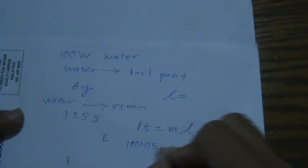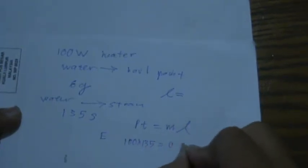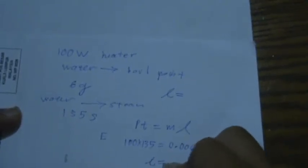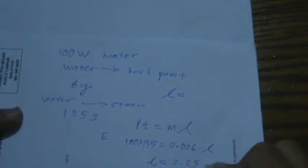So 100 times 135, and then you have 6 gram, you should change it to 0.006, so you have L. So L after some calculation is actually 2.25 times 10 power of 6.